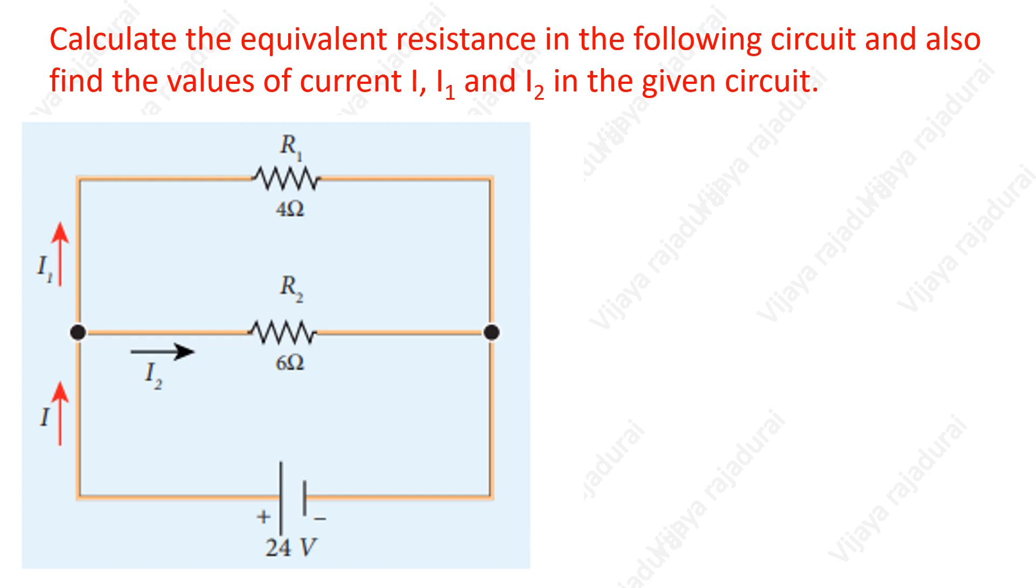In this circuit, two resistors are connected in parallel having resistance R1, 4 ohm and R2, 6 ohm. Here potential difference is same but current is not same because this is a parallel connection.